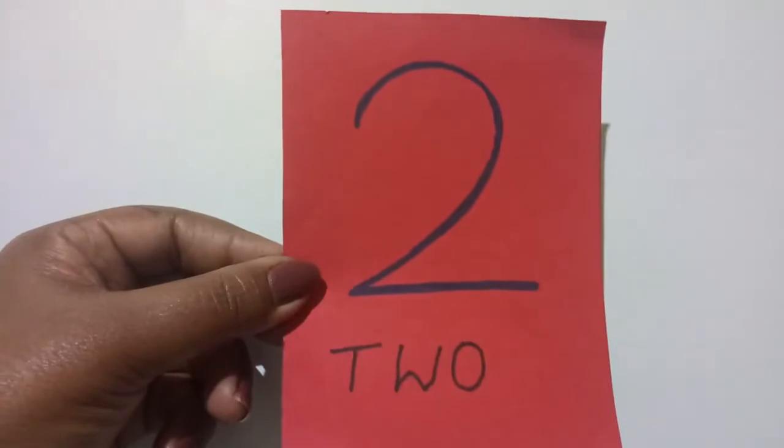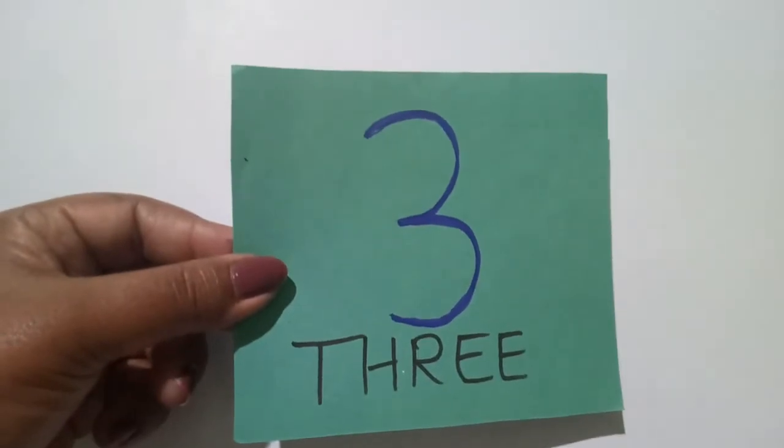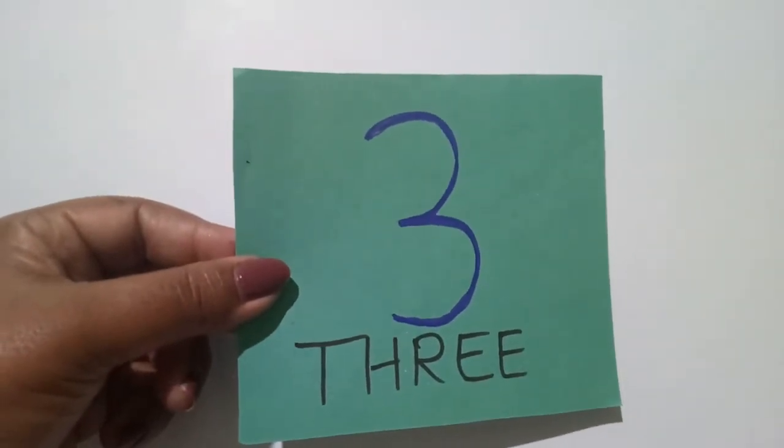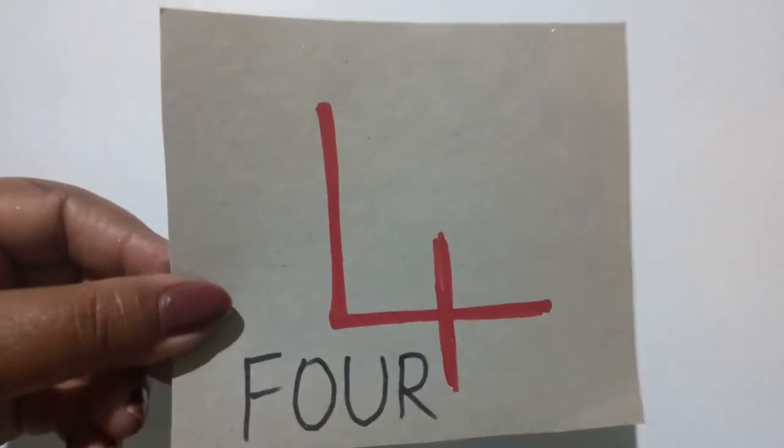Now, go to next number that is 2, T-W-O, 2. Now, let us, the next number is 3, T-H-R-E-E, 3. Now, we have 4, F-O-U-R, 4.